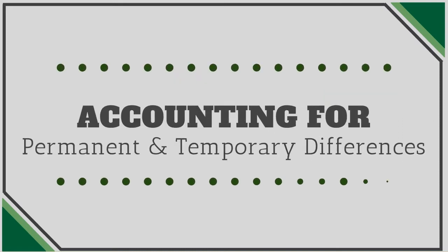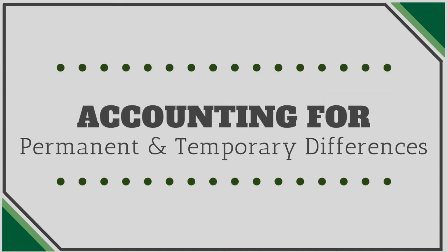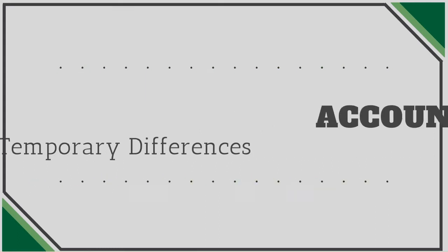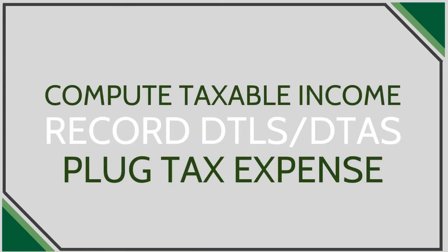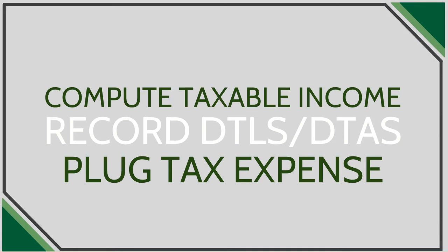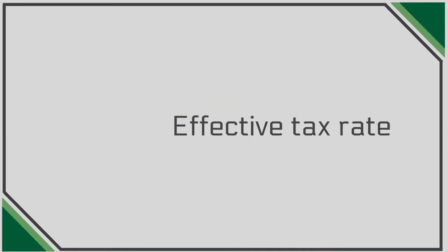Most large companies have both temporary and permanent differences. They compute taxable income to get their payable, quantify their cumulative deferred tax liability and benefit on their temporary differences, and plug tax expense to balance. They then provide, in the footnotes to the financial statements, a reconciliation between the U.S. statutory rate and their effective rate.